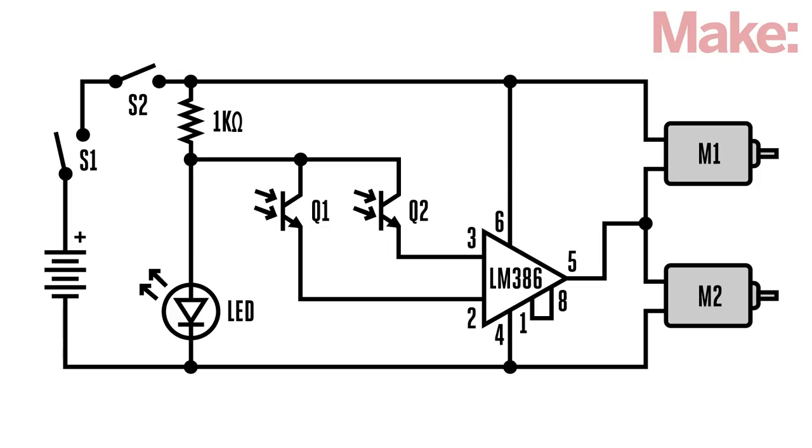The key is pin five. When one eye sees light, pin five acts as a current sink and only motor number one is powered. When the other eye sees more light, pin five acts as a current source and only motor two is powered.